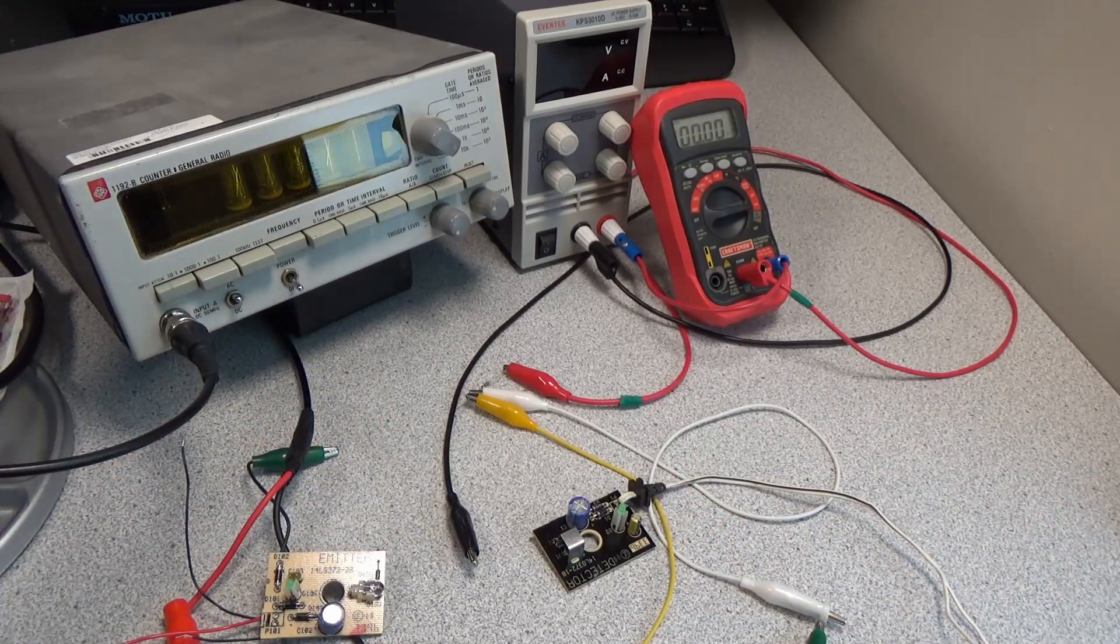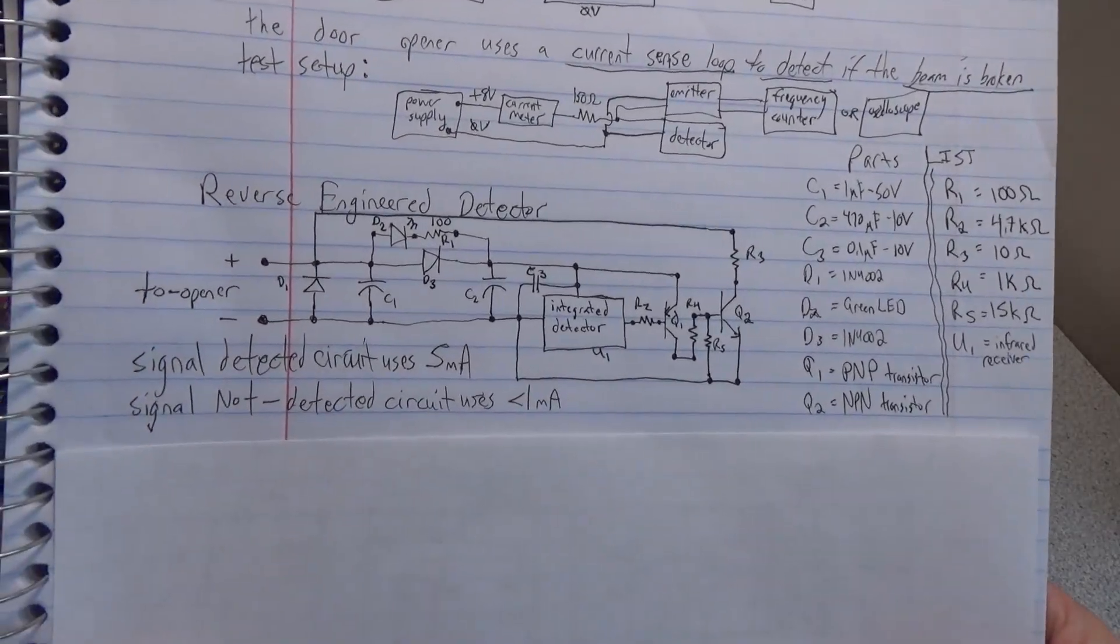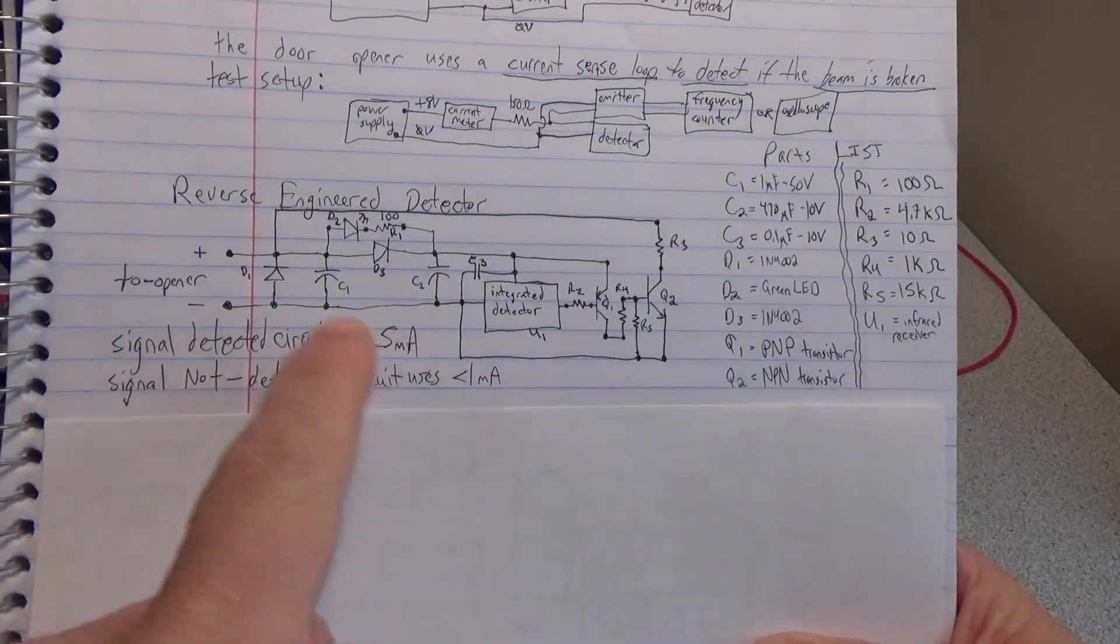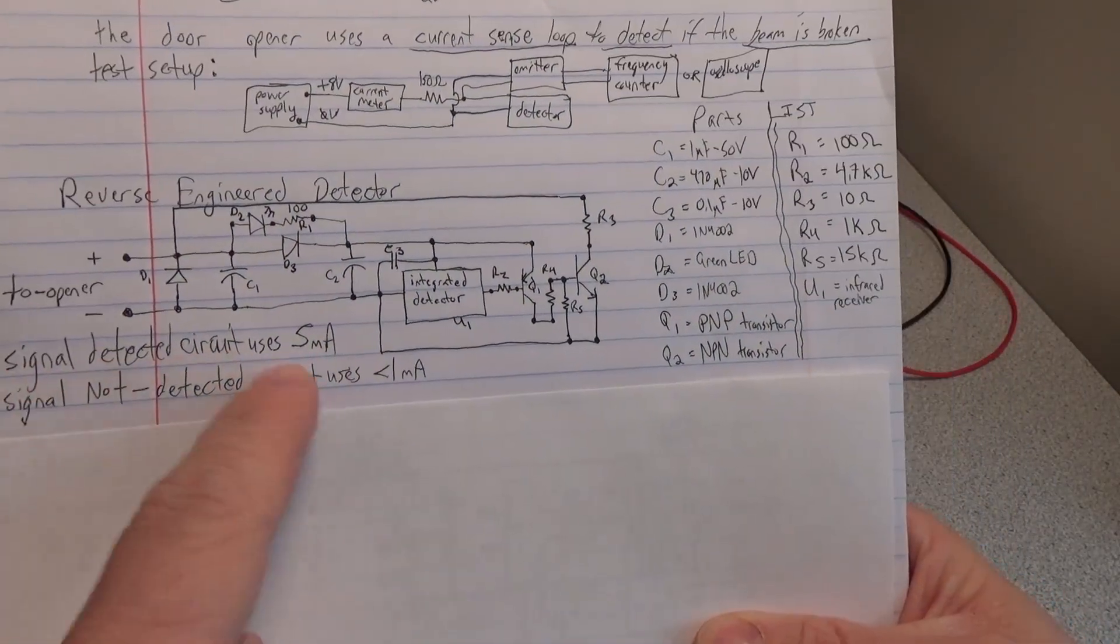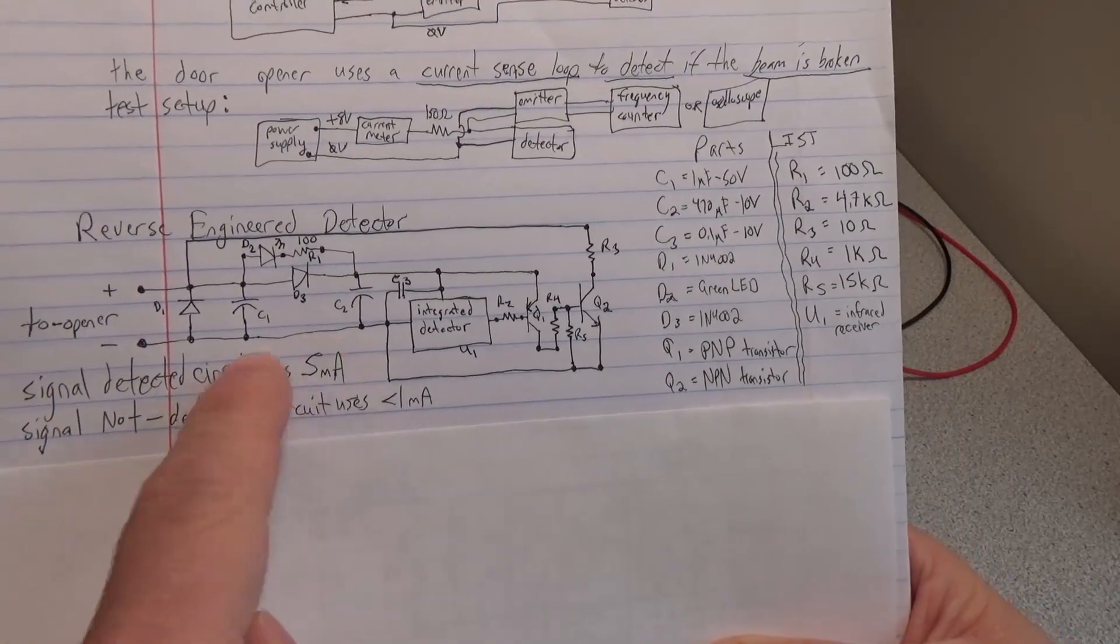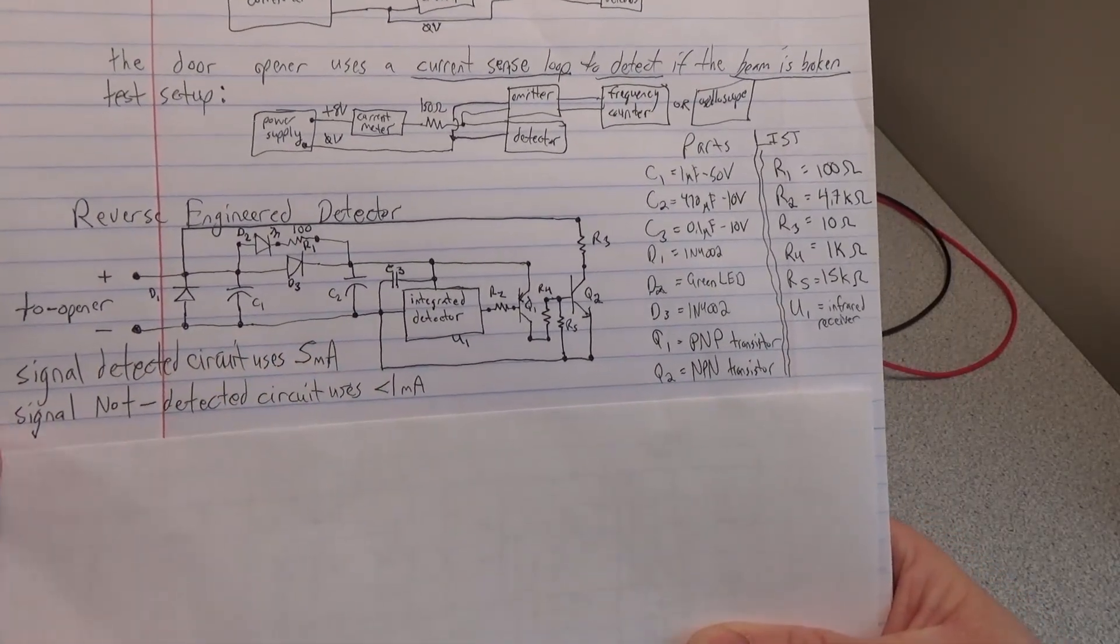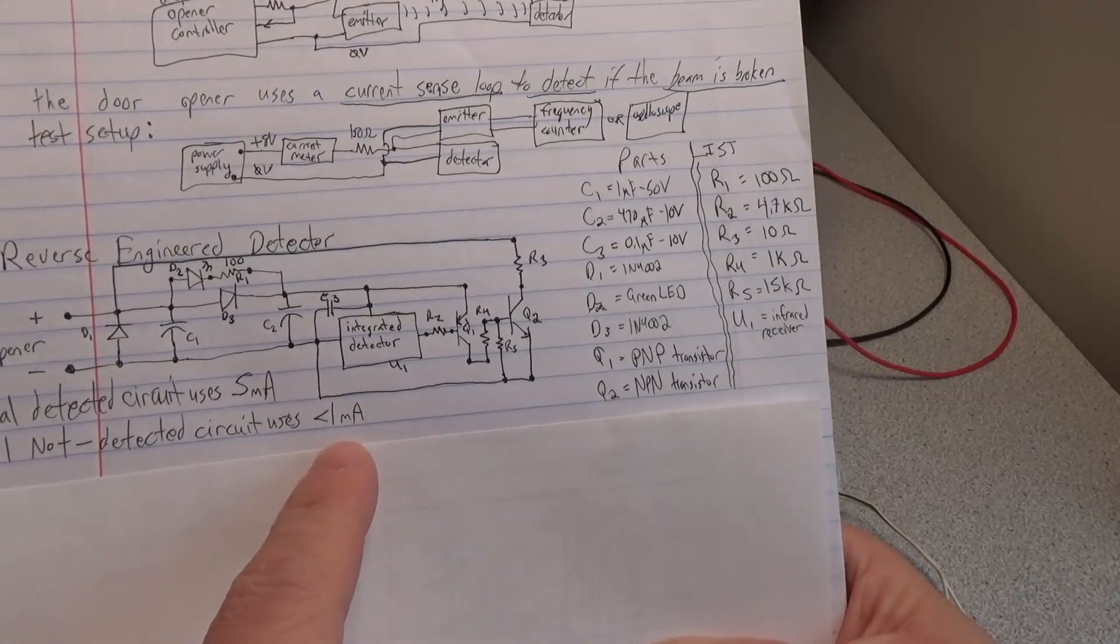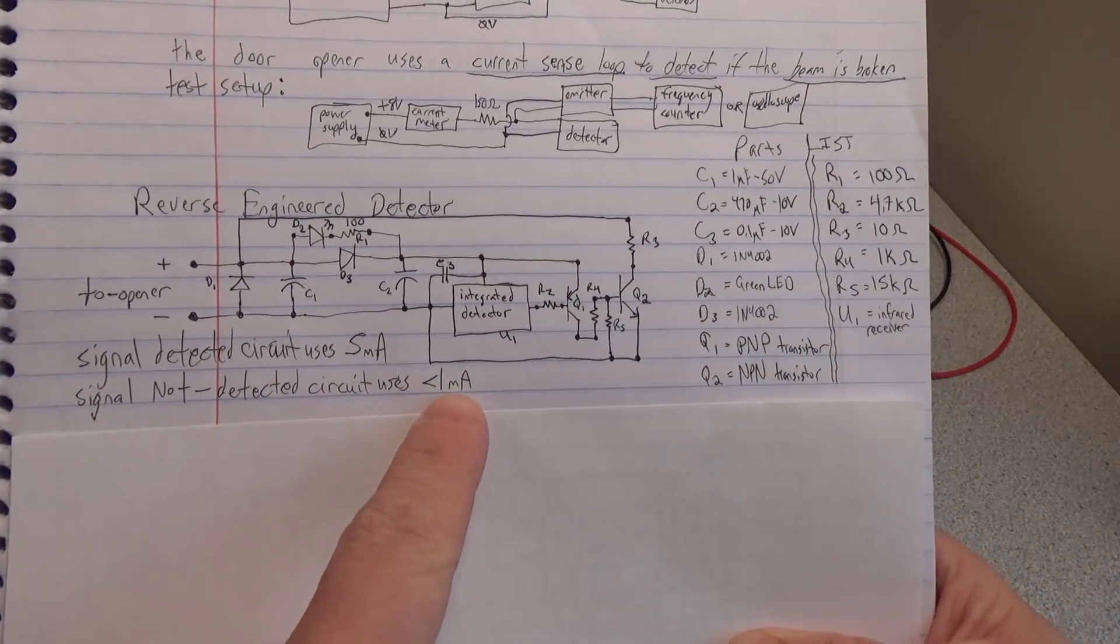Let's take a look at the schematics. First, we have our detector. It's a pretty interesting circuit - when signal is detected it uses about 5 milliamps. When the signal is not detected, it uses less than 1 milliamp. Those are approximate numbers.